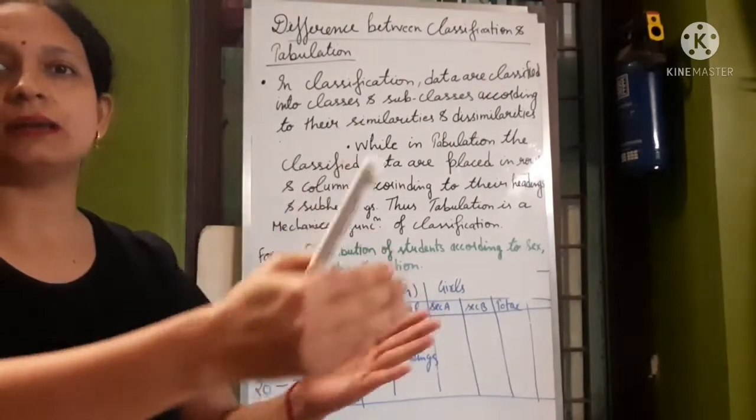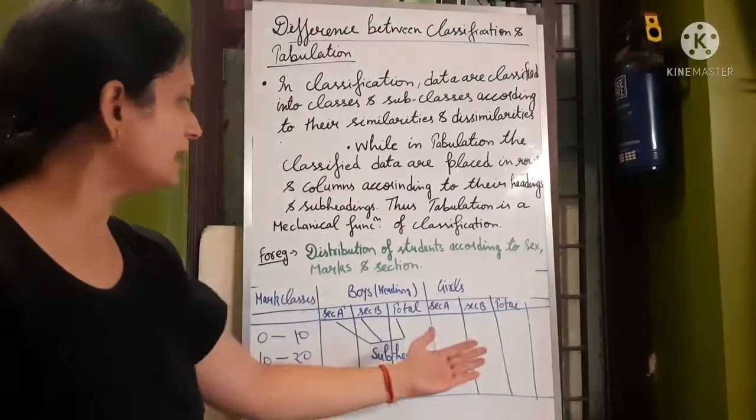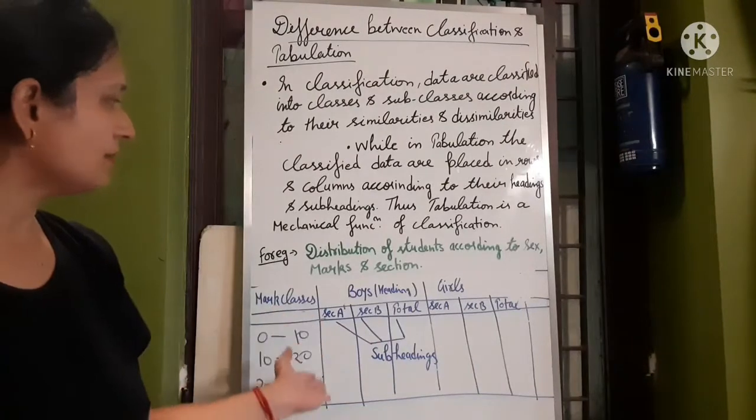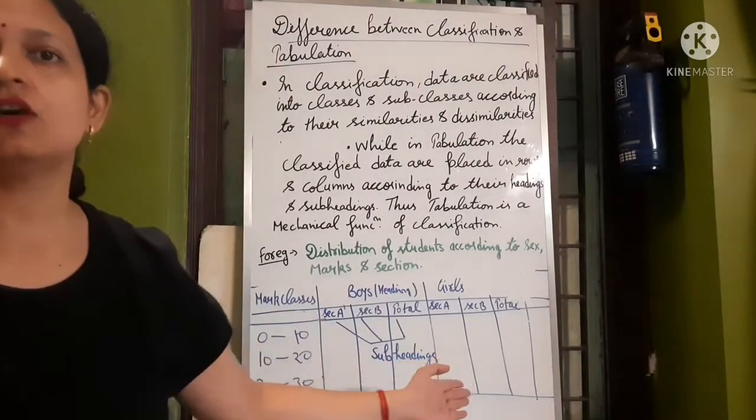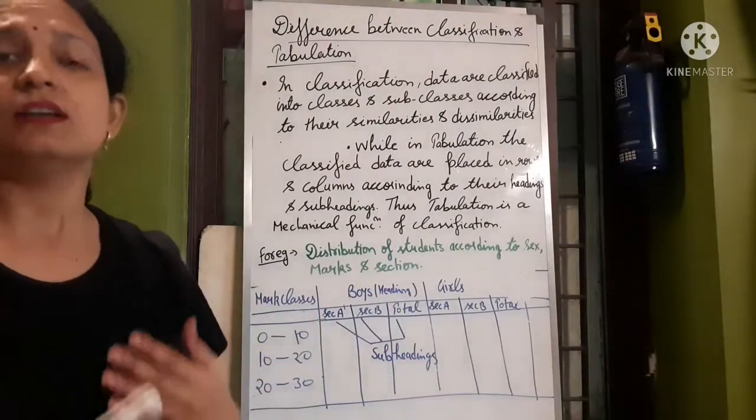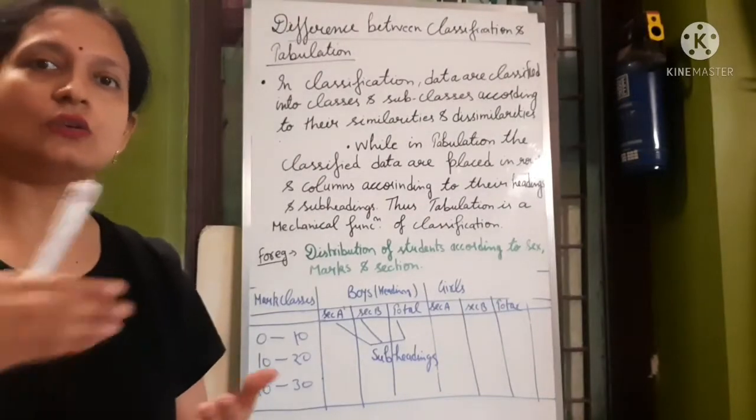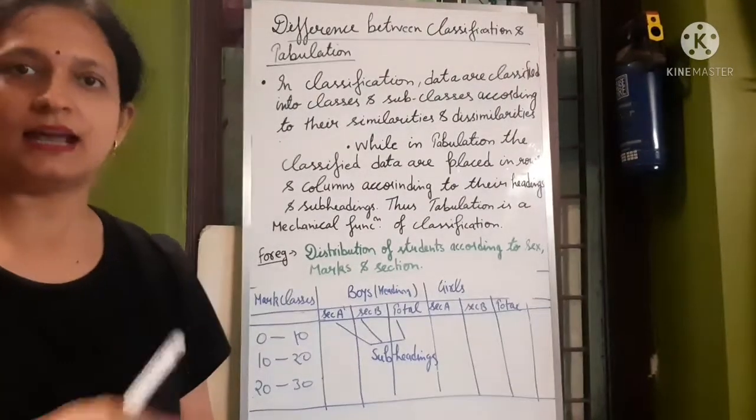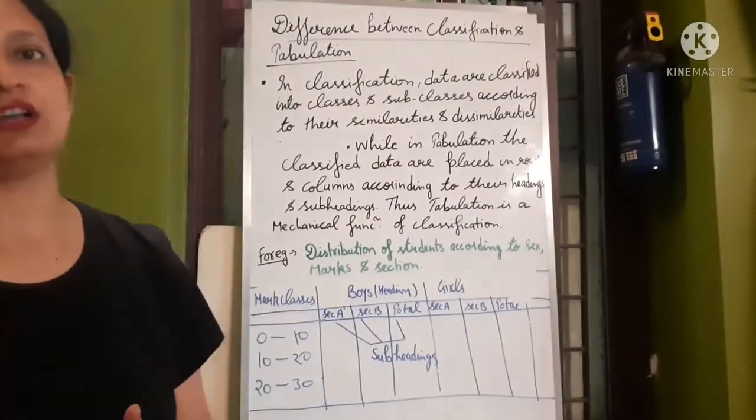When we create a table with rows and columns, and when we put data in the form, then we use two types of things. Classification is used and tabulation is also used.